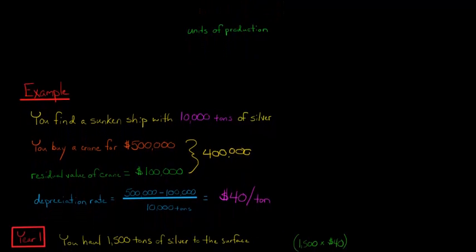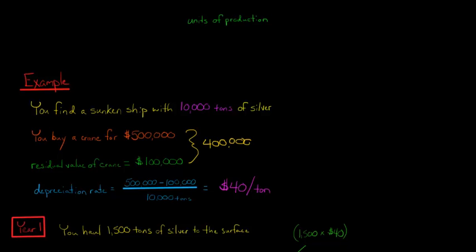Now that we know the depreciation rate, as we haul tons of silver to the surface and recover that silver, we can depreciate the asset. If in the first year we didn't recover any silver at all, we wouldn't have any depreciation expense — because it's as we produce units, not just as time passes.